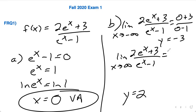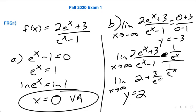So as you approach positive infinity, to show your work, this is a free response question, you actually multiply by 1 over e to the x, 1 over e to the x, which gives you the limit as x goes to infinity of 2 plus 3 over e to the x over 1 minus 1 over e to the x.